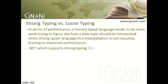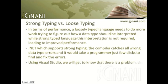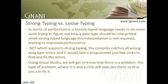In .NET, which supports strong typing, the compiler catches all wrong data type errors, and it would take a programmer just a few clicks to find and fix the errors. Using Visual Studio, we will get to know that there is a problem, the type of problem, where it is, and a click is all it takes to go there and fix it. Compare this with a loosely typed programming compiler, where you have to run the application, get an error, go back to the code, make the change, compile and execute, and continue the process again.